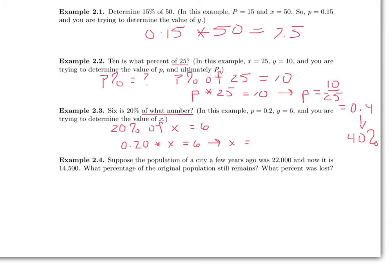If x times 0.2 is equal to 6, I can calculate x by taking 6 and dividing it by 0.2. If I work this out on a calculator, I arrive at 30. So, 20% of 30 is 6.